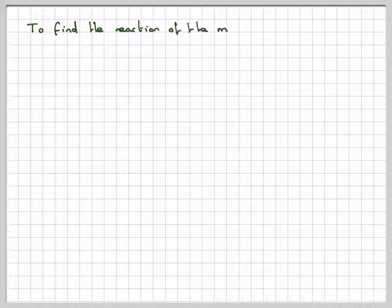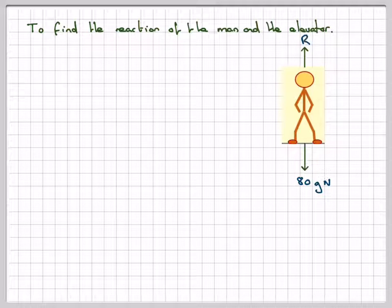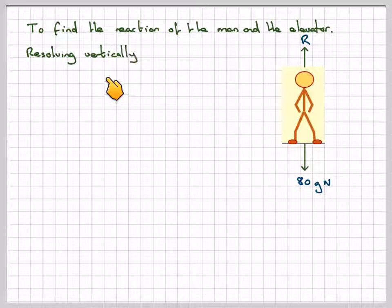Now, to find the reaction of the man and the elevator, the man weighs 80g and its reaction will be upwards. Resolving vertically,